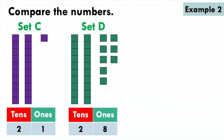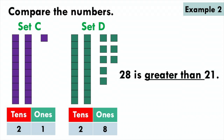In our previous example, we said when we compare numbers we look at the tens first. But in this case, both numbers 21 and 28 have 2 tens. So because we cannot tell which number is greater or smaller by looking at the tens, we go on to look at the ones. 21 has 1 one and 28 has 8 ones. 8 is greater than 1, so 28 is greater than 21.